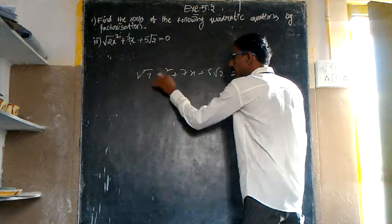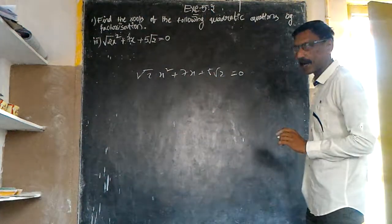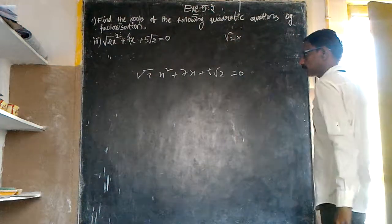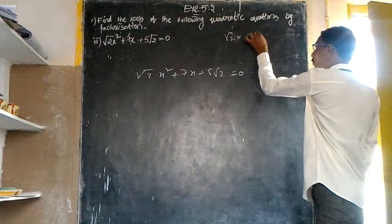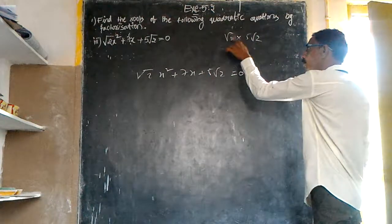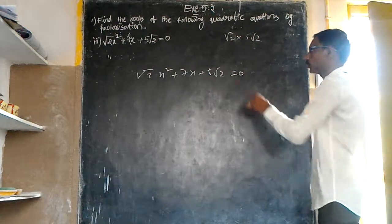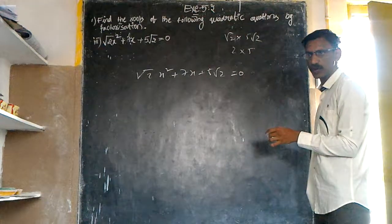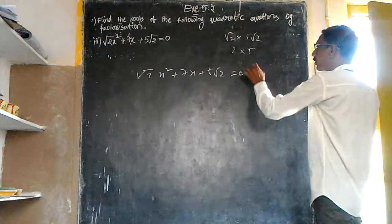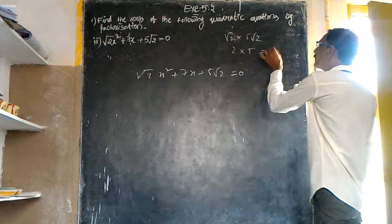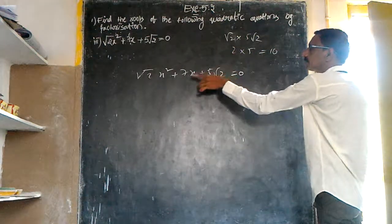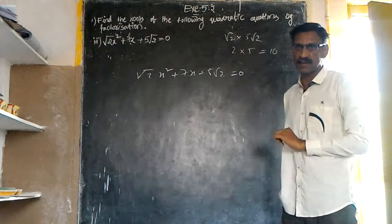So √2 into 5√2, that's √2 × √2 × 5. √2 × √2 equals 2. Two fives are ten. 2 plus 5 is 7.